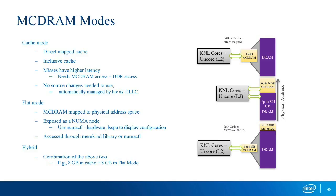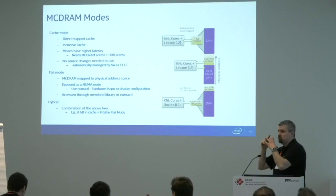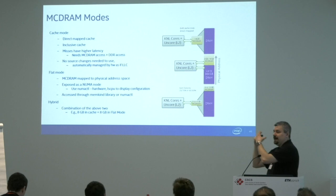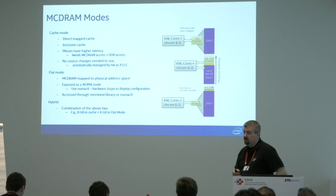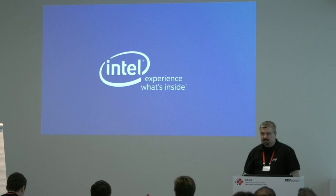The takeaway: memory-bandwidth-bound code will benefit from MCDRAM; memory-latency-bound code will not. Hans will talk about MCDRAM modes. There are three: cache mode — simulating an L3 cache using MCDRAM; flat mode — everything explicitly visible as slow and fast memory NUMA domains; and hybrid mode — part of MCDRAM acts as an L3 cache, part is explicitly managed DRAM. These are boot-time decisions — you must reboot the node to change them. That's it from my side — I left five minutes for questions.